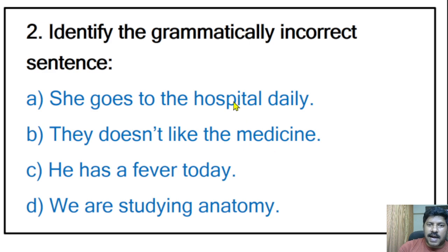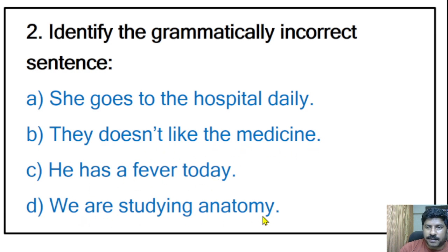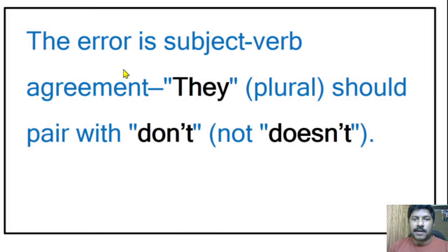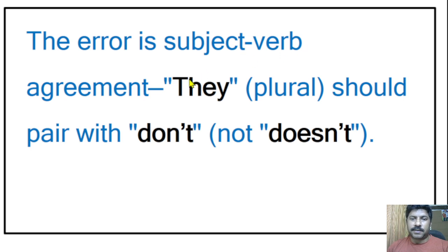Twenty-second question: identify the grammatically incorrect sentence. Options: 'She goes to the hospital daily,' 'They doesn't like the medicine,' 'He has a fever today,' 'We are studying anatomy.' The incorrect sentence is 'They doesn't like the medicine.' Since 'they' is plural, the correct form should be 'They don't like the medicine.' The error is subject-verb agreement.